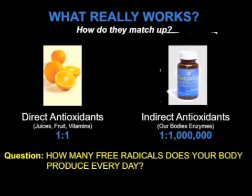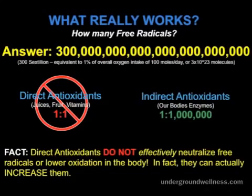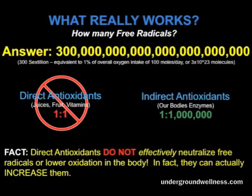How many free radicals are we talking about? We have to know that before we realize which approach is superior. The answer is staggering: 300 sextillion free radicals are produced in one 24-hour period by one healthy individual. This is not someone who's diseased or ill — this is a healthy person. It's 300 sextillion, which is the number three followed by 23 zeros.